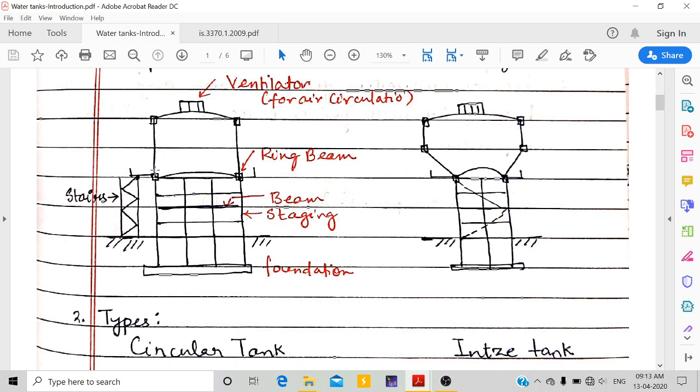We can use stairs for access. These are the columns which are called staging, and then foundation. These are the beams and columns for supporting this water tank, and there is a ventilator for air circulation.